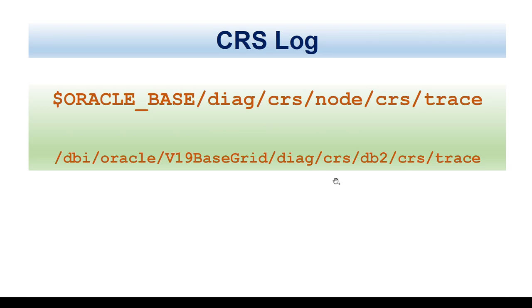The CRS log is in the grid base. Oracle base is nothing but the grid base. The path is DIAG/CRS/node_name/CRS/trace. In this particular location, you will find the CRS logs. So if you have any issues with the CRS, you can find the log there.